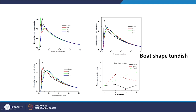From the graph you can have a comprehensive understanding of what is happening and how the RTD curve is changing. By looking at the variation in the RTD curve, you can get a feel for where the mean residence time will be higher or lower. This completes the analysis for the boat-shaped tundish.